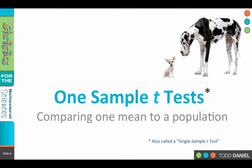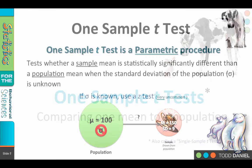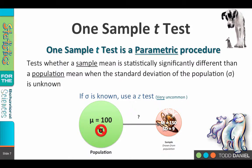Because we are using population values, this means that the one sample t-test is a parametric procedure. Anytime we use population values, we are using parametric statistics.